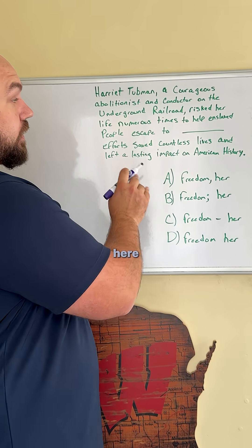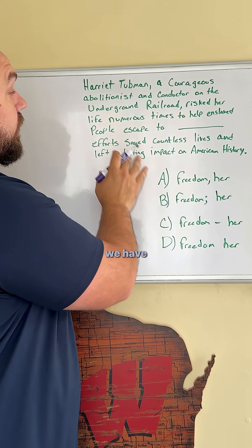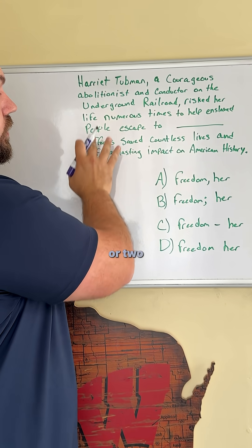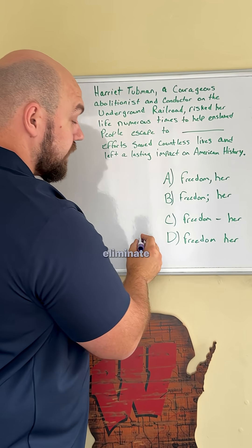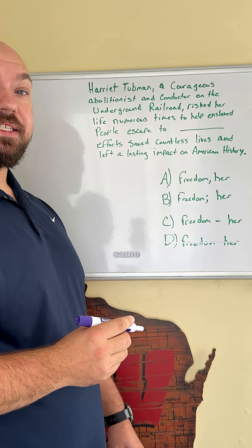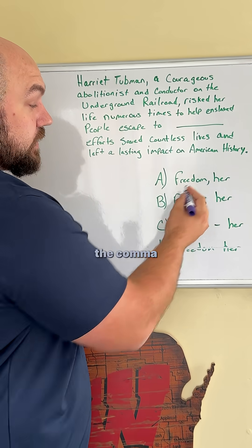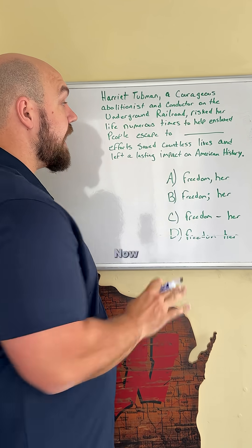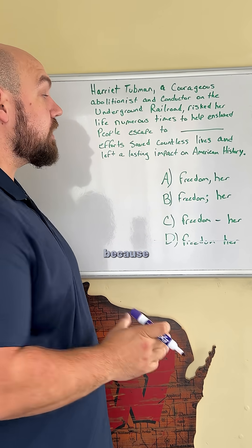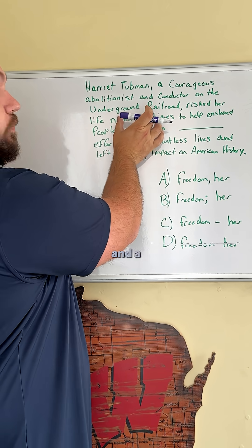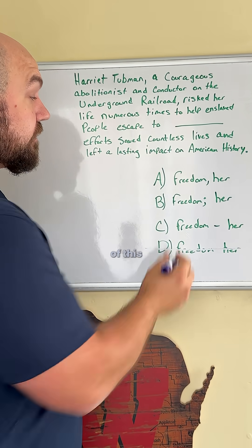Looking at it here, we can already see that before and after the blank we have two separate statements — two separate lines of thought. So we can eliminate option D because it runs them into the same sentence. The comma tells us to take a pause, but we'd want the word 'and' since we have a complete thought before and after. So we can probably get rid of option A as well.